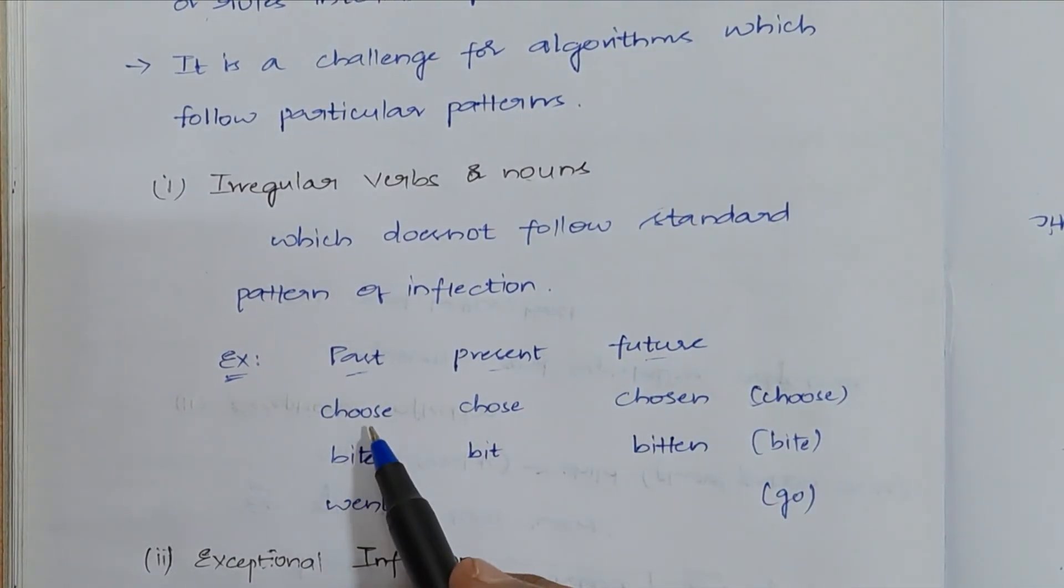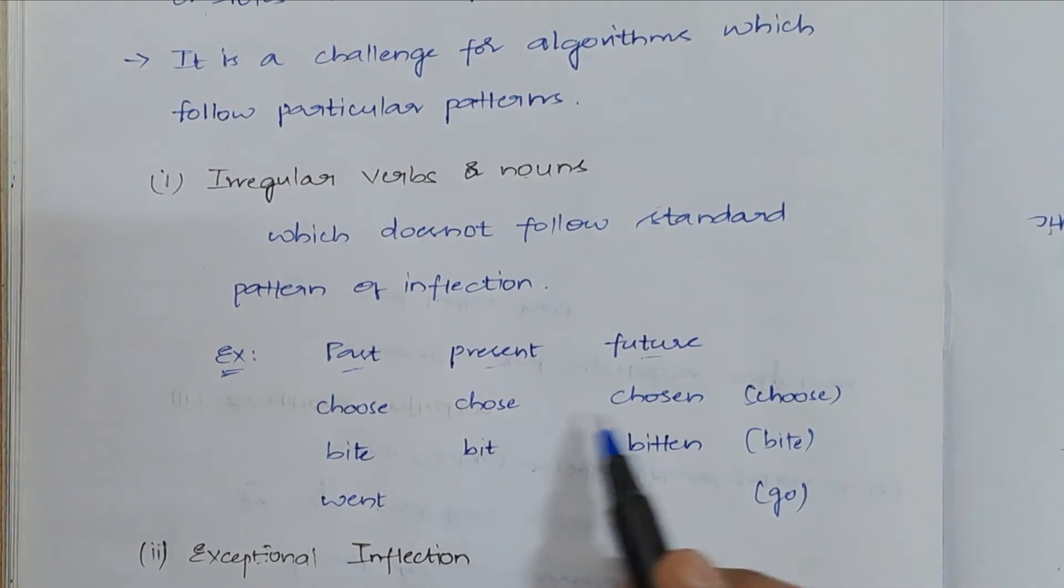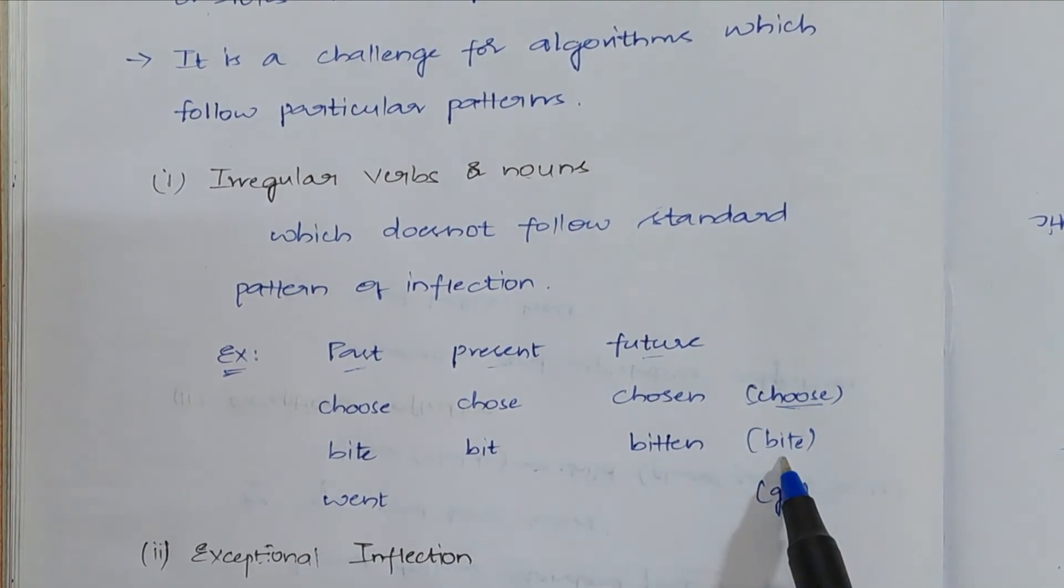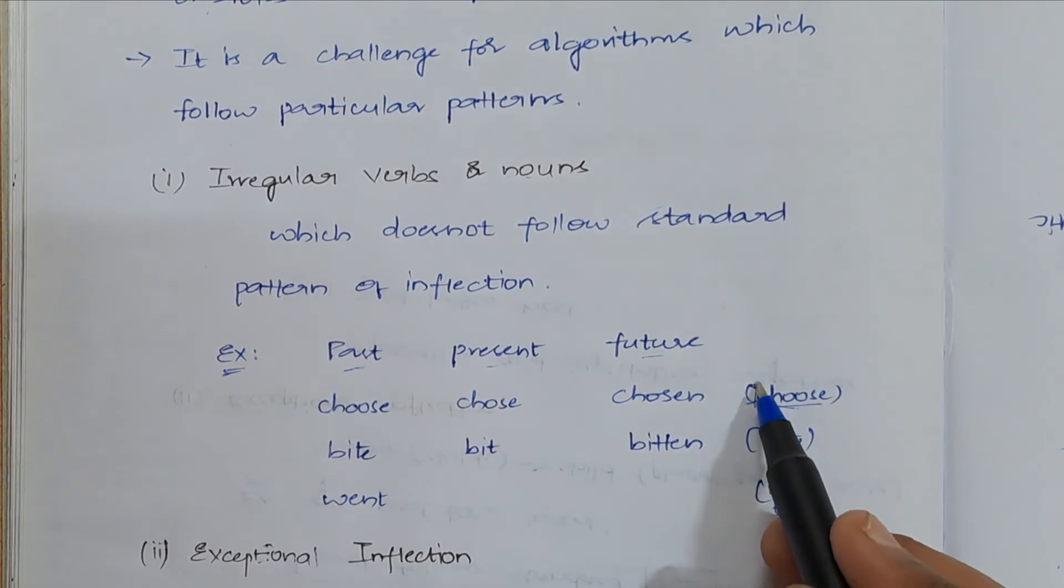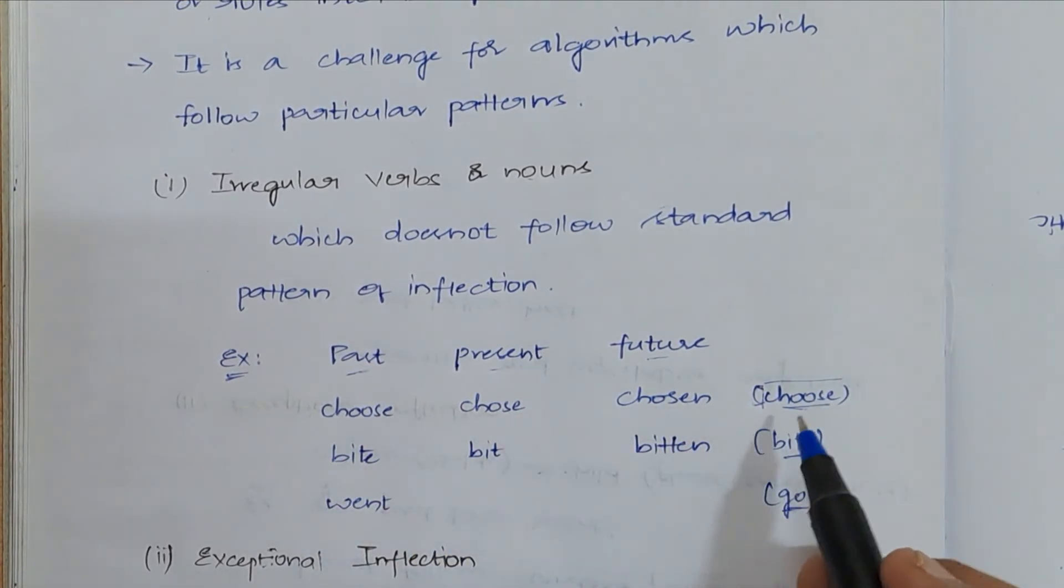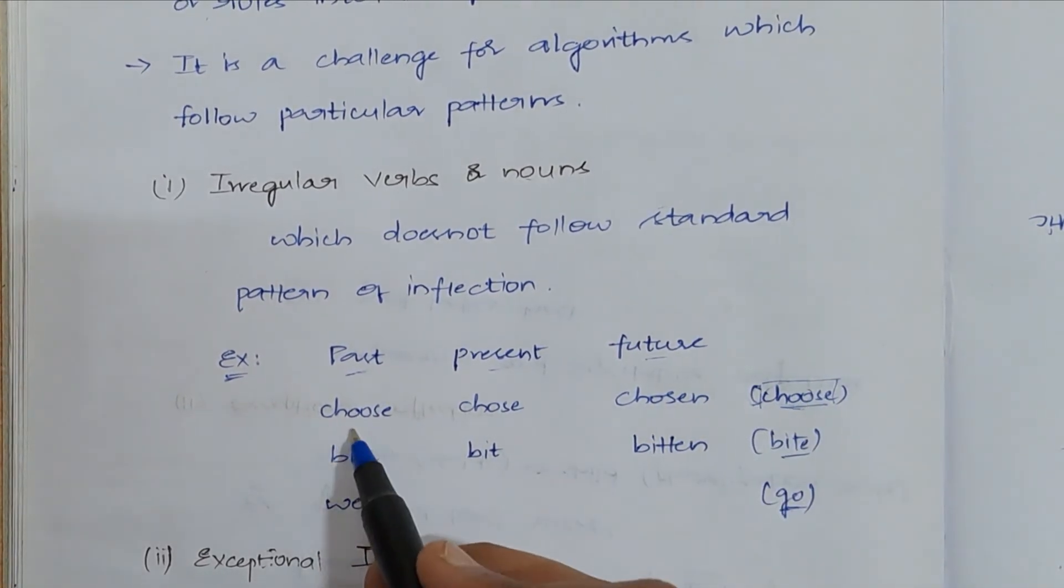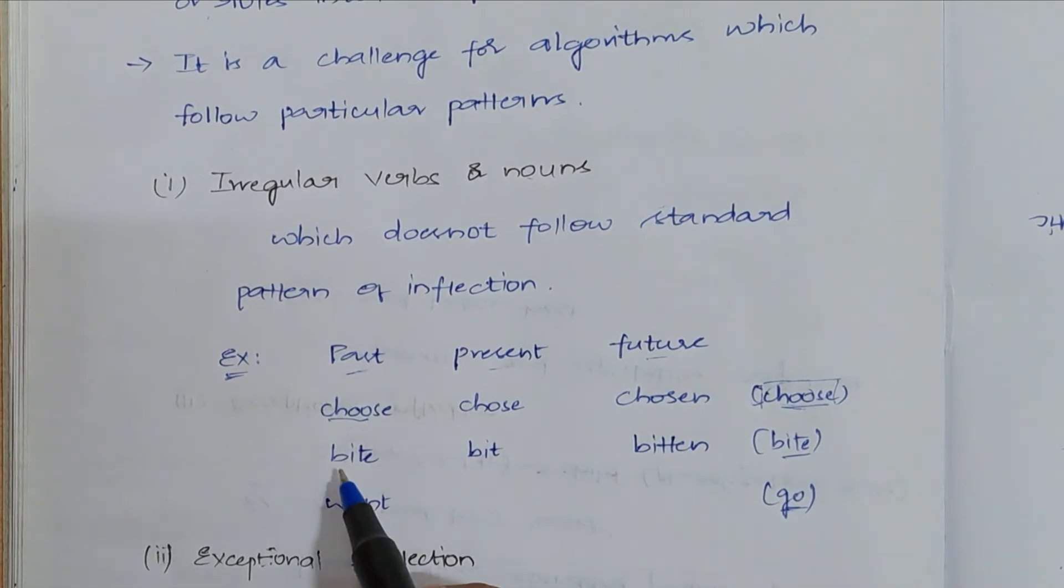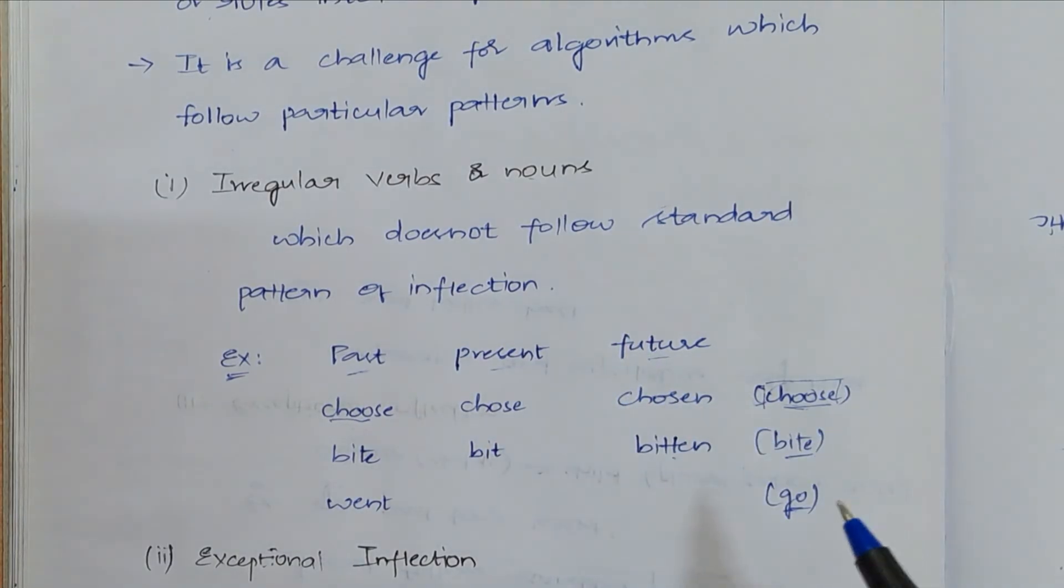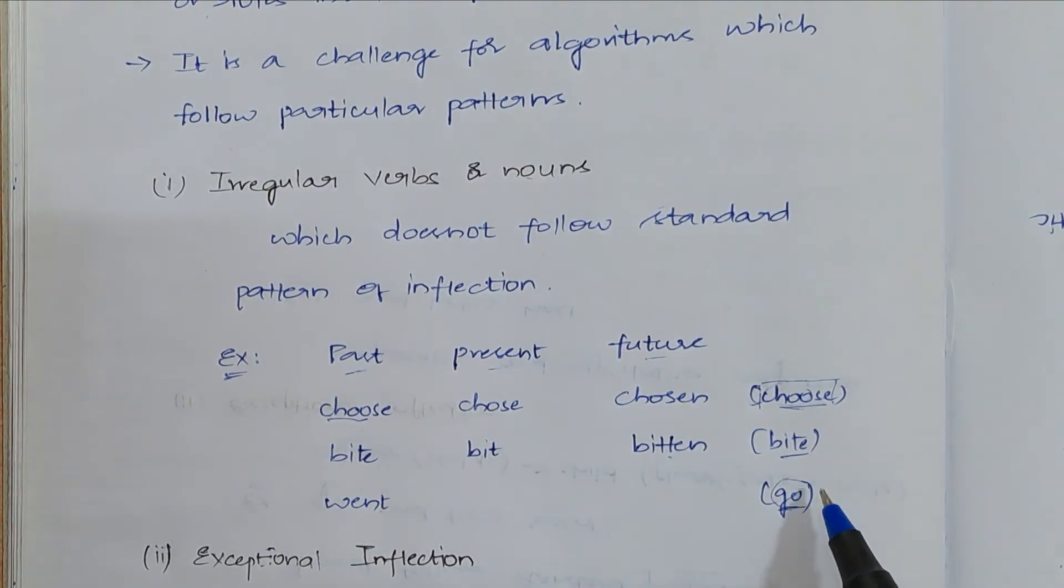Past, present, future - I have listed out this. The base word for this is choose, the base word for this is bite, and the base word for this is go. Whenever you are writing past, present, future for choose, that certain word will be appearing in past, present, and future. When you take byte also, that certain word will be appearing in past, present, future.